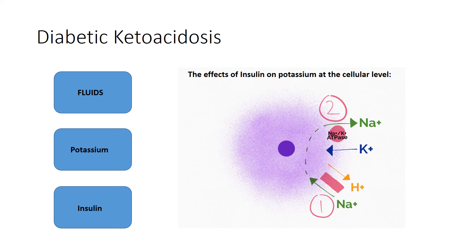Very briefly, HHS is basically everything that DKA is not. There are no ketones present in the urine or serum, and there's no acidosis present. The treatment is very similar, which includes the same three big things: fluids, electrolyte repletion targeted towards potassium, and administration of insulin.